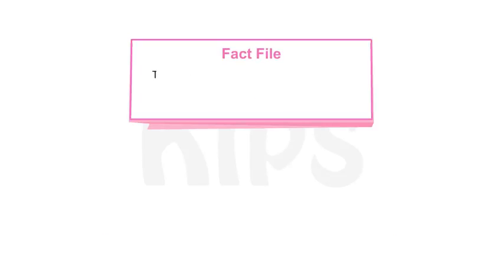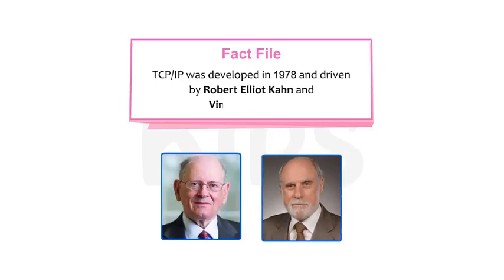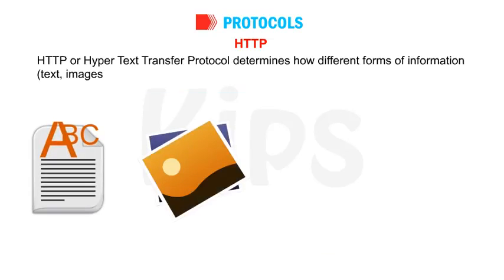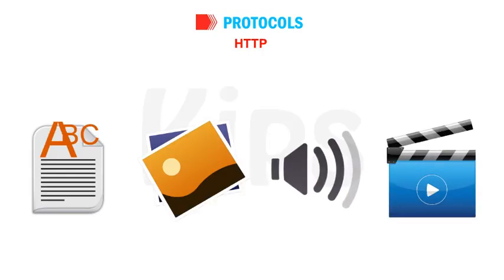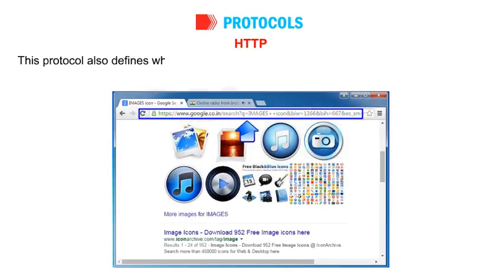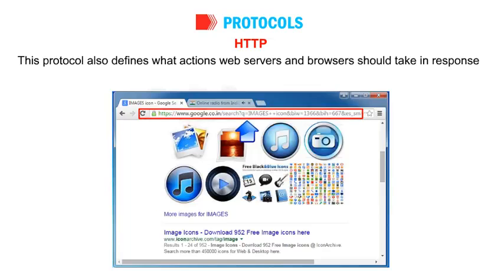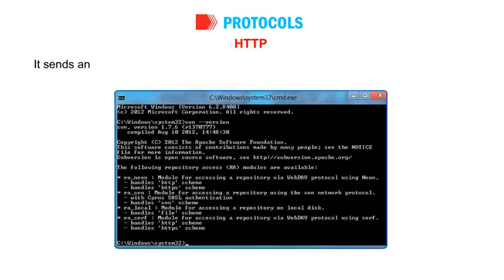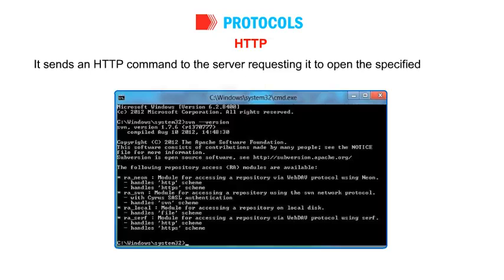TCP/IP was developed in 1978 and driven by Robert Elliot Kahn and Vinton Gray Cerf. HTTP — Hypertext Transfer Protocol: HTTP determines how different forms of information — text, images, sound, video and other multimedia files — get transferred to your screen over the Internet. This protocol also defines what actions web servers and browsers should take in response to various commands. For example, when a user enters the URL for any web page in the address bar of the browser, it sends an HTTP command to the server requesting it to open the specified web page.